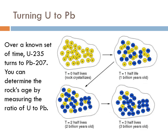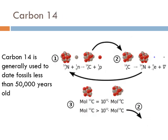U-235 slowly breaks down into lead, and we can look at those ratios to determine the age of the rock. The isotope we typically use for human contemporary fossils is carbon-14 — you've probably heard it called carbon dating.